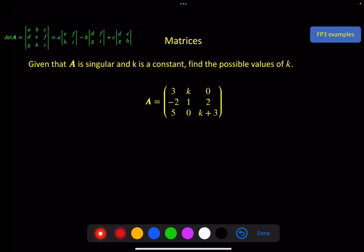Here's an example. Given that A is singular — therefore the determinant of A must equal 0 — and k is a constant appearing in two places in the matrix, find the possible values of k. So we need to find the determinant of A, set it equal to 0, and solve the resulting equation.